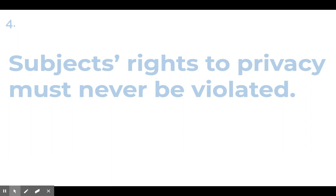Number four: subjects' right to privacy must never be violated. You have to give consent, and if you say they can use your data but not your name, they cannot use your name. They cannot violate your personal data just for the sake of research. You have to give consent to everything they use. They can't go out and say, for example, 'Rachel Sanderson was in this study and did all these things' — if consent wasn't given, that privacy cannot be violated, and you have reason to act against them.